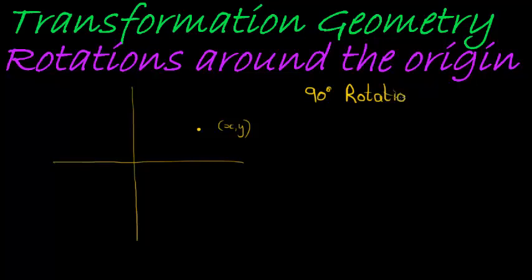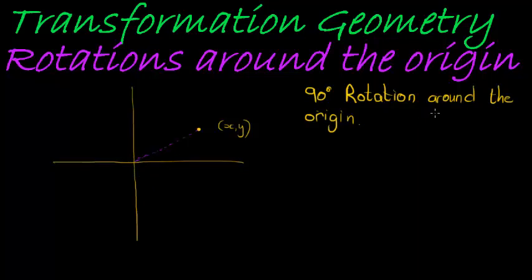We'll look at the basic rotations: 90 degrees and 180 degrees around the origin. What does that actually mean? It simply means I connect that point to the origin with a line, and then in a clockwise direction I measure 90 degrees from there, then take the same distance and plot the image out there.